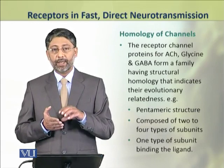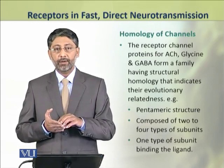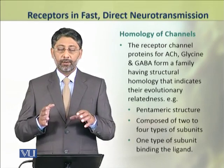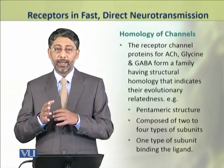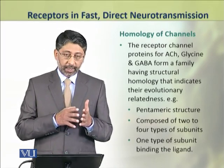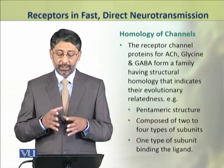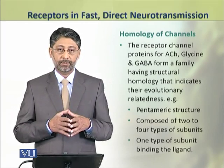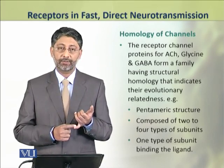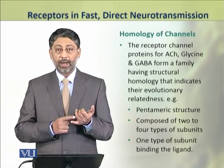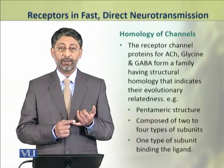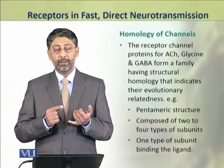Dear students, these channels which are involved in fast direct neurotransmission and are ligand-gated show a particular pattern in evolution. The channels for acetylcholine, glycine and GABA have certain similarities that show their homology. That is, all have pentameric structures. All are composed of two to four types of subunits, out of which one subunit binds the neurotransmitter.